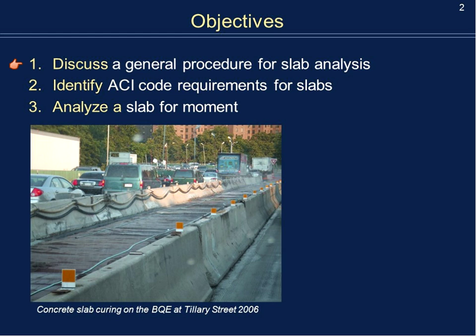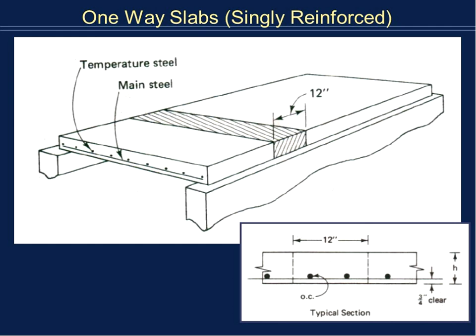How is a slab different from a beam? Well, not very much. You have your slab which spans two beams or two girders. What we're going to do is look at a slab for every 12 inches — essentially look at them as 12-inch wide beams that span between two beams or two girders.